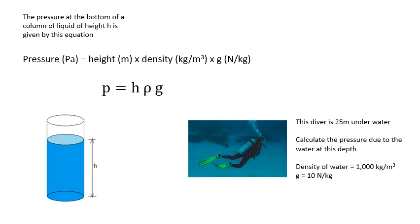Here's an example using P = hρg. This diver is 25 metres underwater — calculate the pressure due to the water at this depth. The density of water is 1000 kg/m³ and g = 10 N/kg. So P = h × ρ × g = 25 × 1000 × 10 = 250,000 pascals, or 250 kilopascals, approximately two and a half atmospheres.